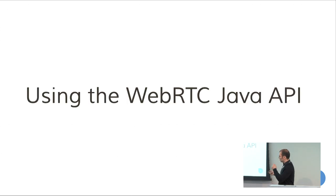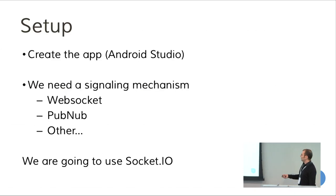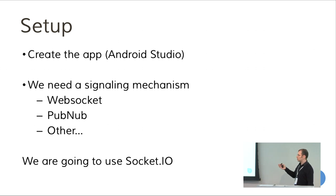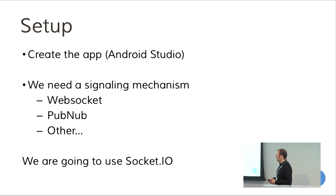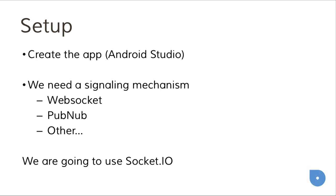Now let's start with using the Java API to create an application — this is the fun part. We create a single activity application using Android Studio. To start with WebRTC, we need to decide on a signaling mechanism. You can use WebSocket, PubNub, or even SMS — it's up to you. In the example, I'm going to use Socket.io, which is very easy to set up a server with.